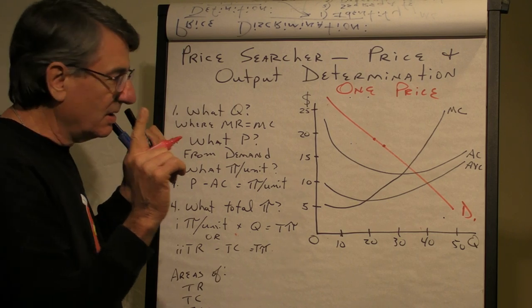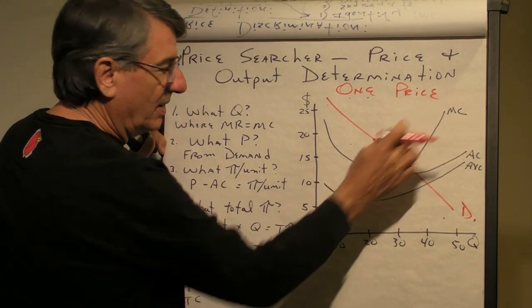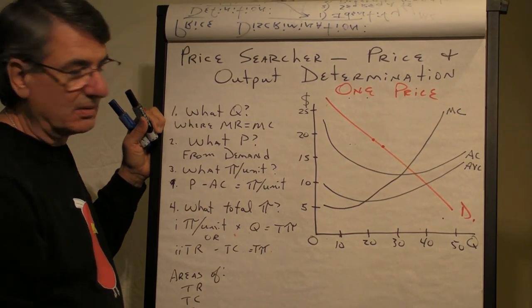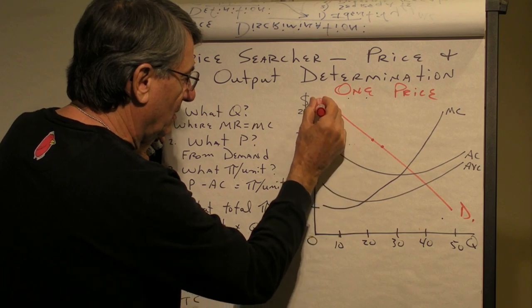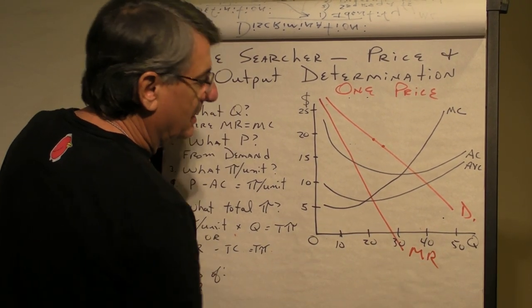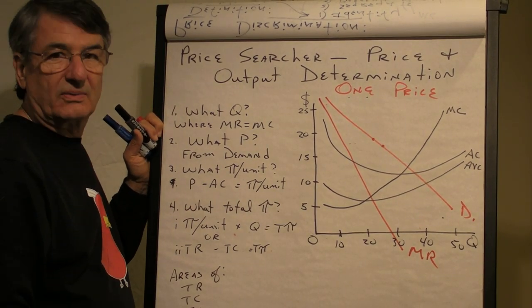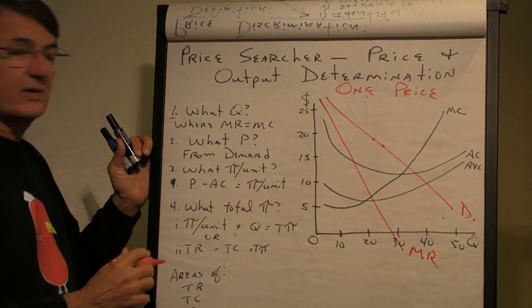Now, when we're talking about Price and Output Determination, we want to know what is the marginal revenue and marginal cost, so we can make a decision based on these. If it's a one-price Price Searcher, we know that marginal revenue has twice the slope of the demand curve. So there's the marginal revenue. And with Price and Output Determination, we want to answer four questions.